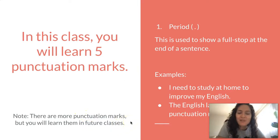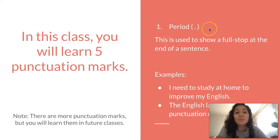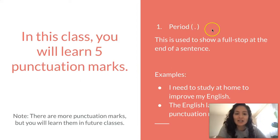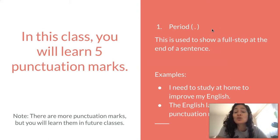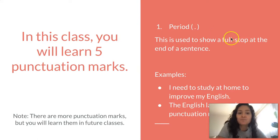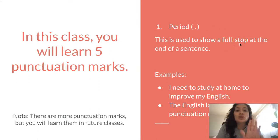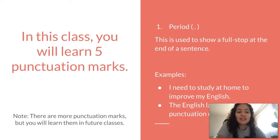Let's start with the first one: the period. The period looks like this — it's just a dot. The period is used to show that a sentence is finished, to show a full stop. Let's take a look at some examples.